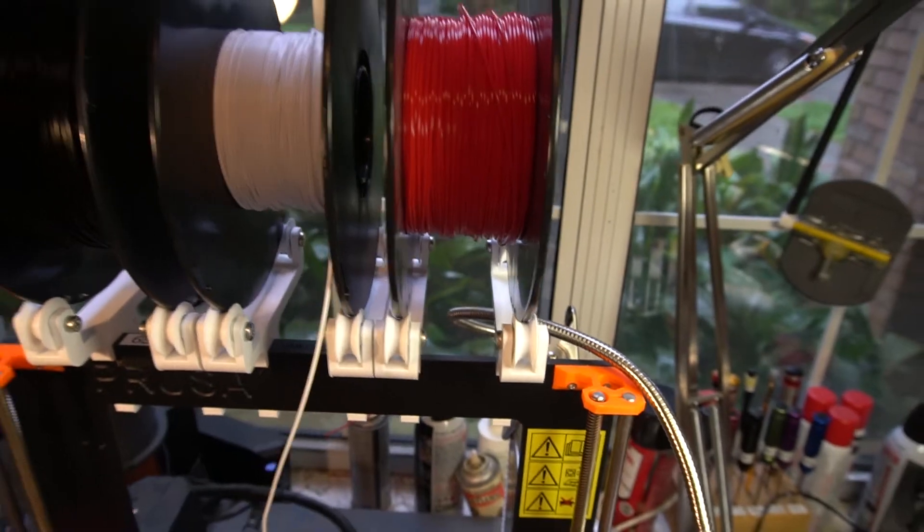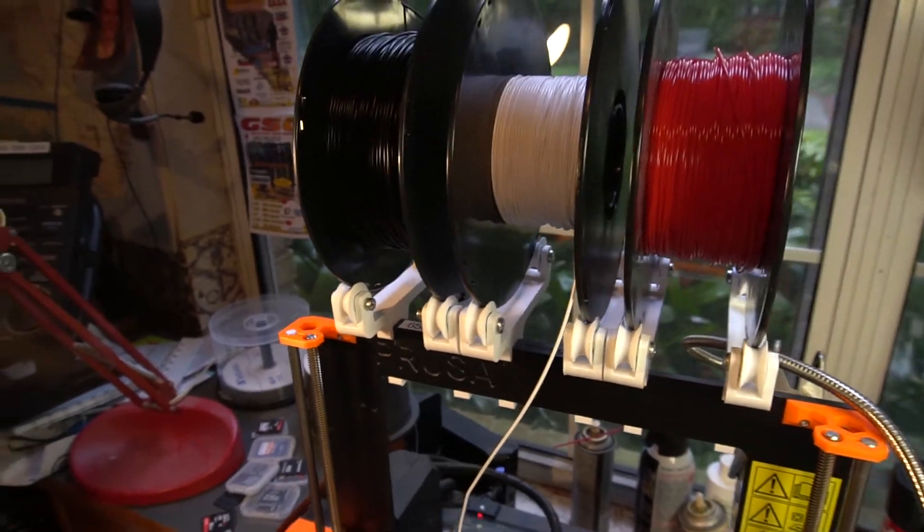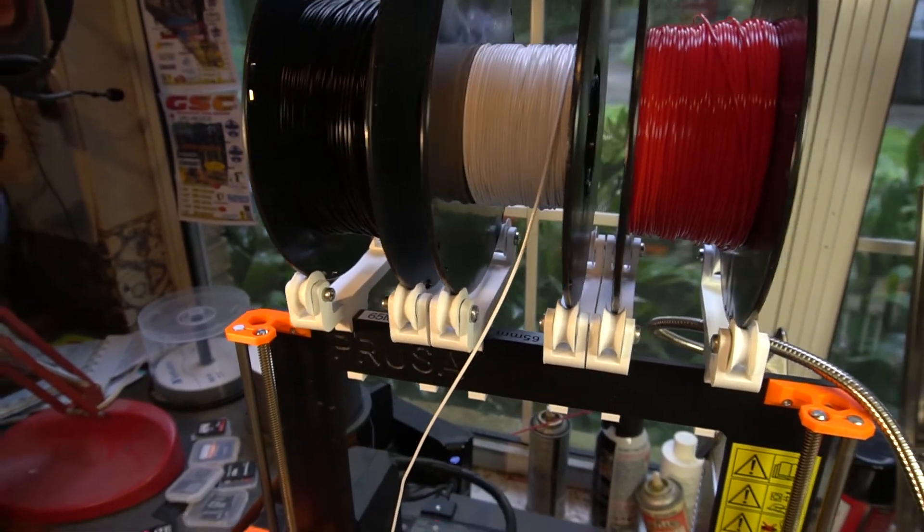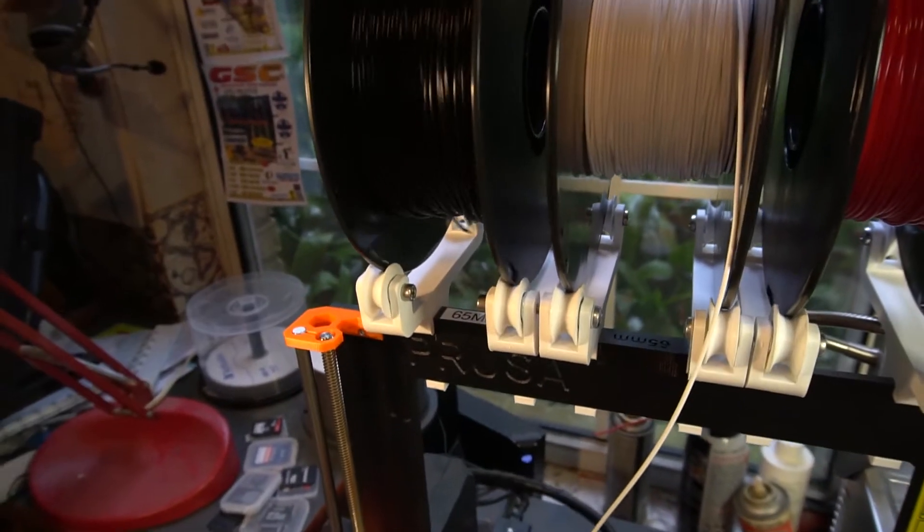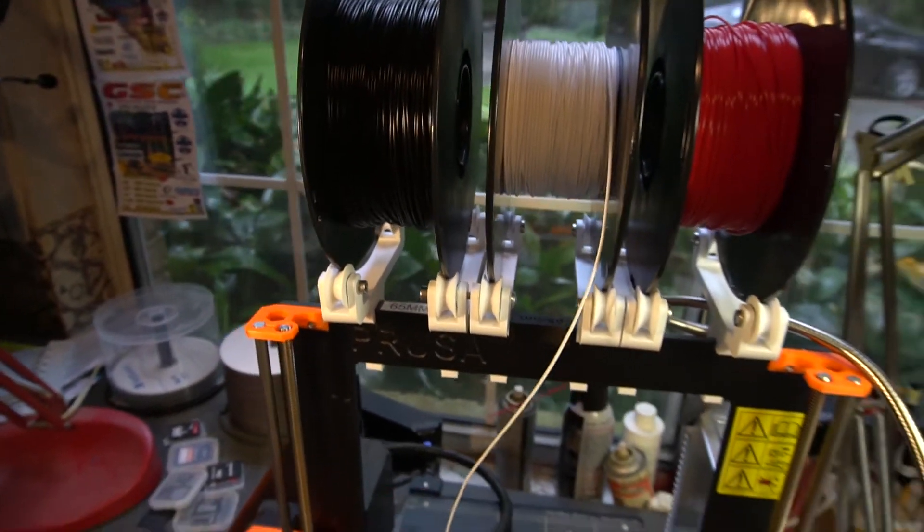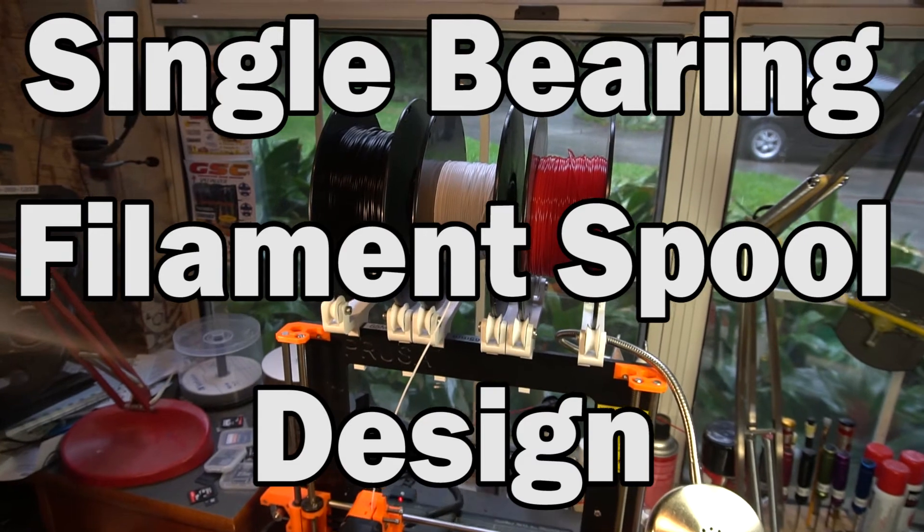So I would definitely maybe take the time and clean, take the rubber seals off, clean up the grease out of the bearings and put some machine oil if you want them to spin like that. And that thing really spins nicely. And that's it, that's the single bearing spool design.